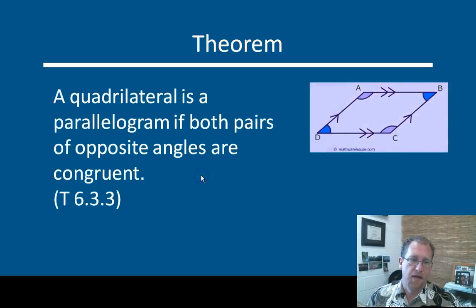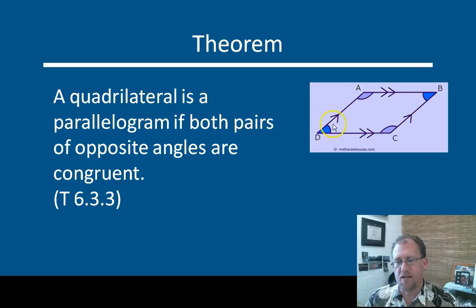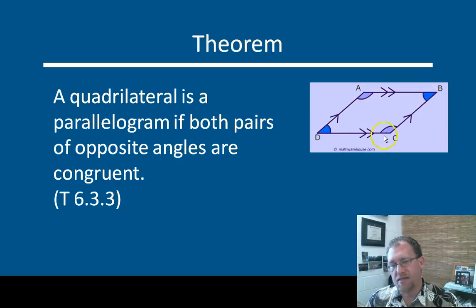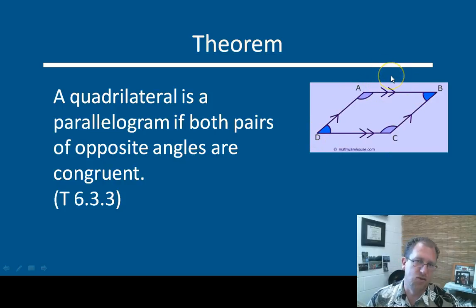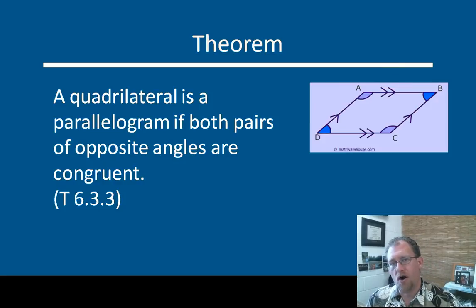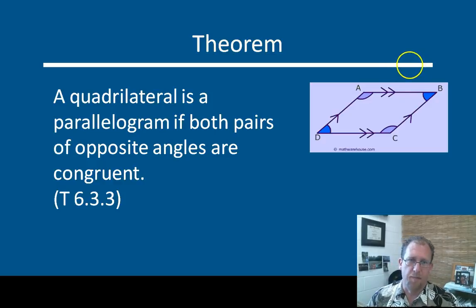Another way to do it is to say that a quadrilateral is a parallelogram if both pairs of opposite angles are congruent. If you can demonstrate that angle D and angle B are congruent and that angle A and angle C are congruent, then you have by definition a parallelogram. You can get to this if you were to say that these are parallel lines and transversals, and if you can demonstrate that all of these angles are congruent, then you can demonstrate that these are all parallel lines and so you have a parallelogram. So if you can demonstrate that the opposite angles are congruent, then you can demonstrate that the quadrilateral is a parallelogram.